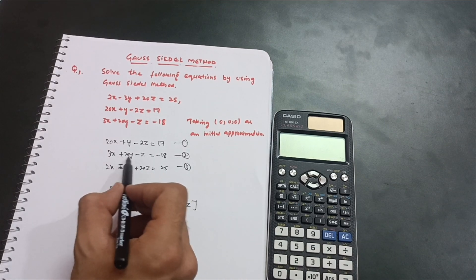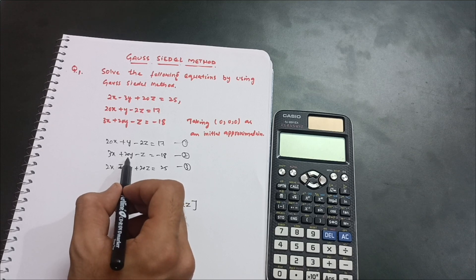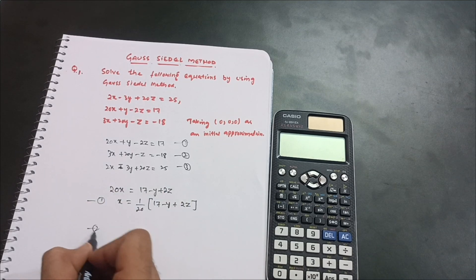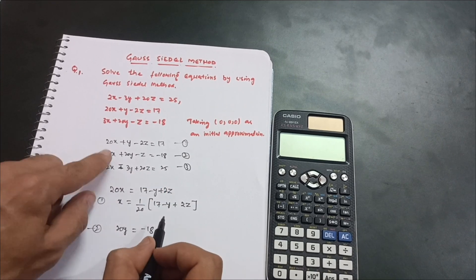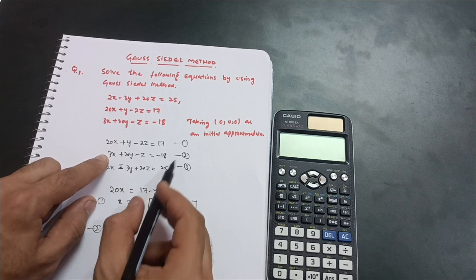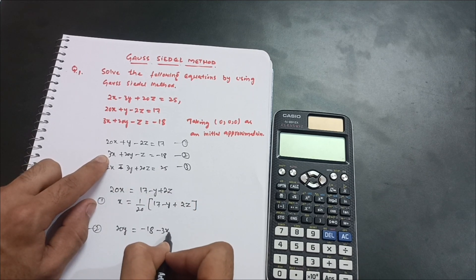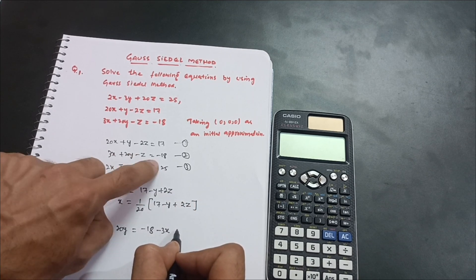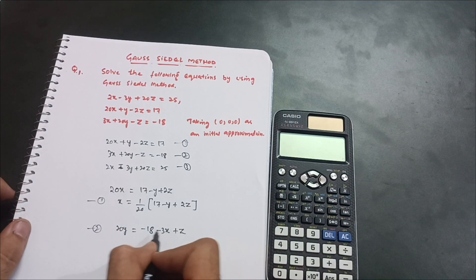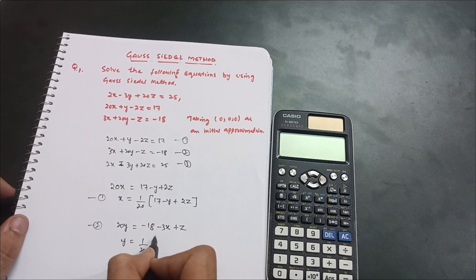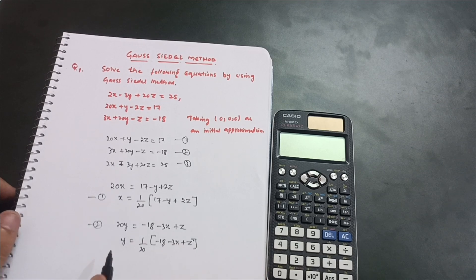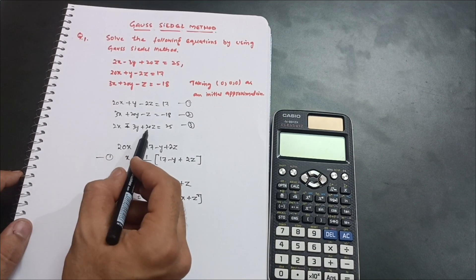For the second equation, the diagonal element is 20y, so rearrange in terms of y: 20y = −18 − 3x + z. Dividing by 20 gives y = (1/20)(−18 − 3x + z). This is your second equation.